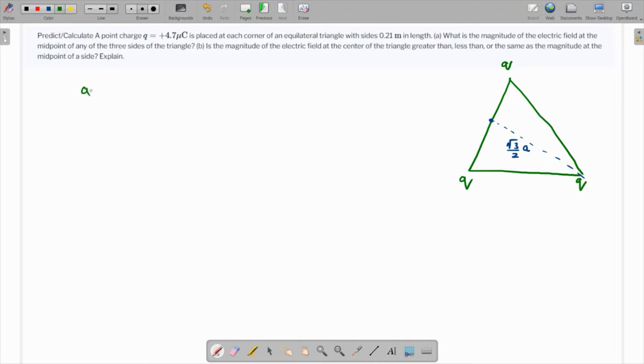So we have the value of the electric field as KQ over root 3 over 2 A whole square. So K is nothing but 9 times 10 raised to 9. Q is 4.7 times 10 raised to minus 6 over root 3 square is 3 over 4 times A square and A is nothing but 0.21 square.